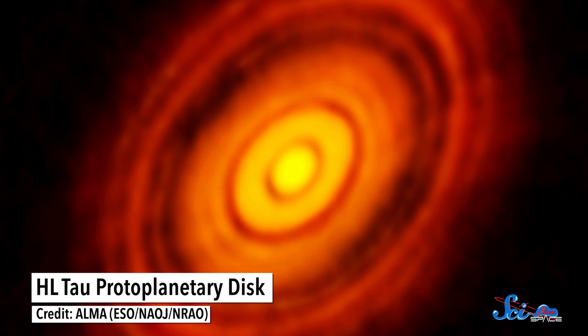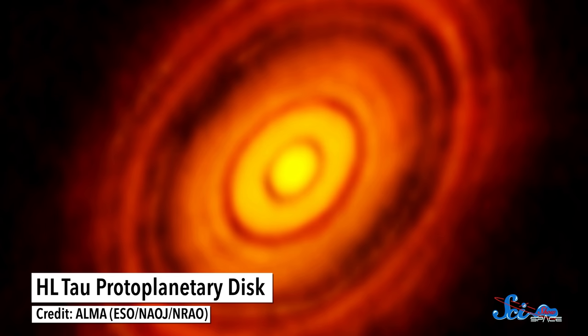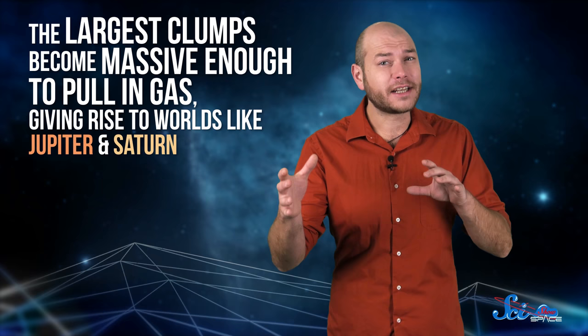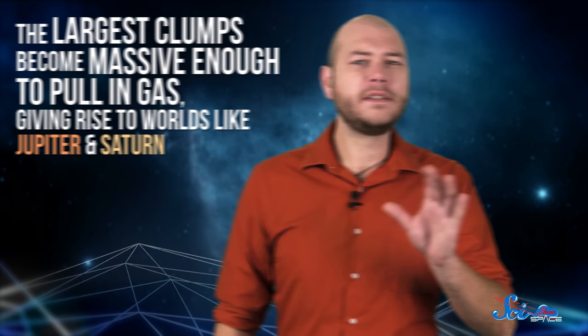Planets form in regions called protoplanetary disks, made up of the leftover gas and dust after a star forms. We see these disks surrounding young stars all over our galaxy. They provide a place for solid matter to clump together, and eventually, the largest clumps become massive enough to pull in gas, giving rise to worlds like Jupiter and Saturn. Once they form, these new planets are still embedded in the protoplanetary disk, and that disk is the key to how they move around.